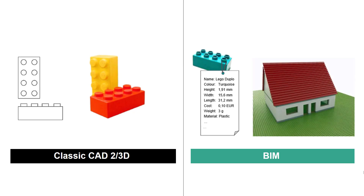If we now transfer this to a building design with BIM, we use the Lego bricks of the different building products and model the building with these bricks. If each component has a price as an attribute attached to it, the software can determine the exact total cost of the building and also evaluate the influence if we use cheaper gray bricks instead of the white ones. The same applies to other aspects as well — for example, if the gray Lego brick has poor thermal insulation properties, we then see the change directly in the total energy requirement of the building.